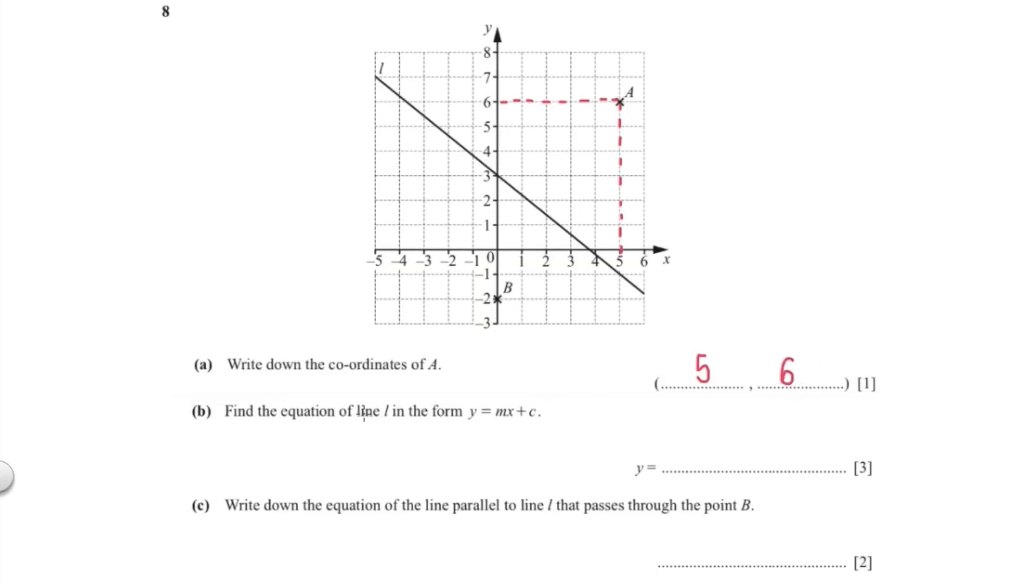Next is find the equation of line in the form y equals mx plus c. So c is your y-intercept. And as you can see, your y-intercept is at 3. So your c is 3 and your m is your gradient.